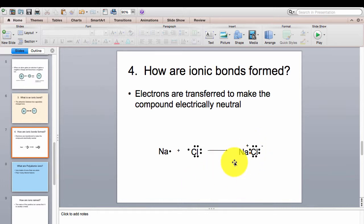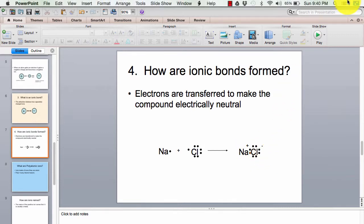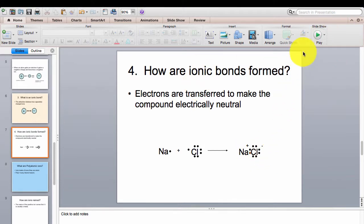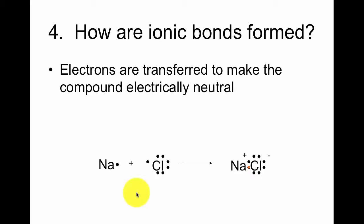Sodium overall became positive, and chlorine became negative. Sodium is now a cation, and chlorine is an anion. They stick together as a compound because one is overall positive and one is overall negative.